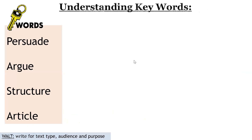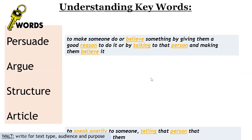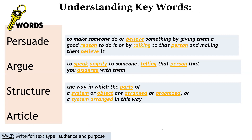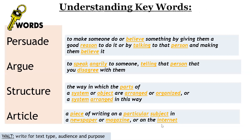Our key words today: we are writing to persuade, we are writing to argue, we are writing in a specific structure, and we are writing an article. So we want to make someone believe something that we are saying — we want to be really clear and make sure people agree with us. Structure is the way we will arrange our writing, in the structure of a newspaper article. And finally, a newspaper article is a piece of writing on a particular subject in a newspaper, magazine, or the internet.